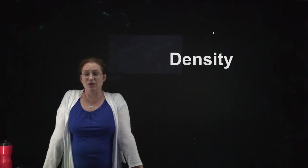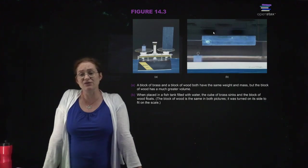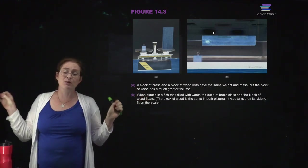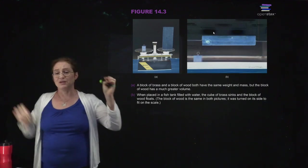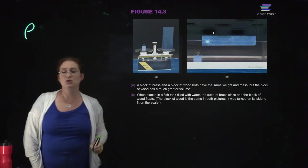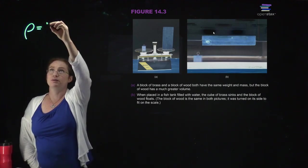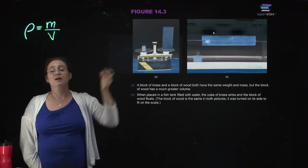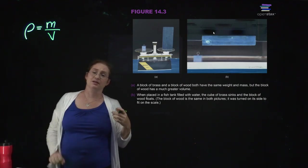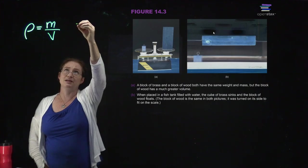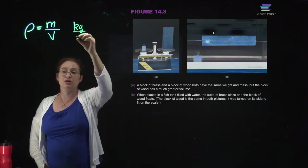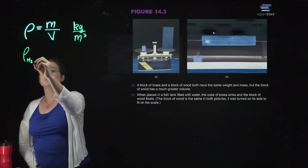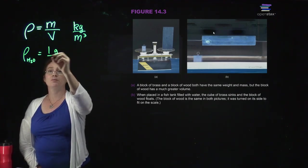When we start quantifying the properties of fluids, we need to define density. In physics, we have to define exactly what we mean so we can talk about it quantitatively. The density, usually denoted by the Greek letter rho, is the mass divided by the volume. This is the mass density, which is what people usually mean when they say density. The SI units are kilograms per meter cubed. A good number to remember is that the density of water is one gram per centimeter cubed.